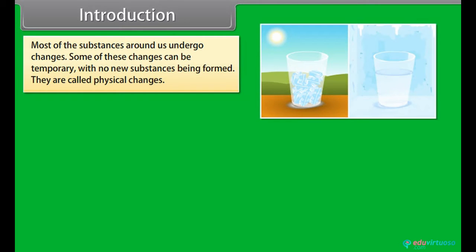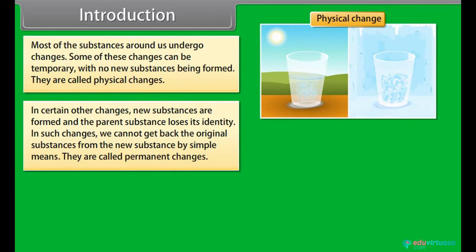Introduction: Most of the substances around us undergo changes. Some of these changes can be temporary with no new substances being formed. They are called physical changes. In certain other changes, new substances are formed and the parent substance loses its identity. In such changes, we cannot get back the original substance from the new substance by simple means.